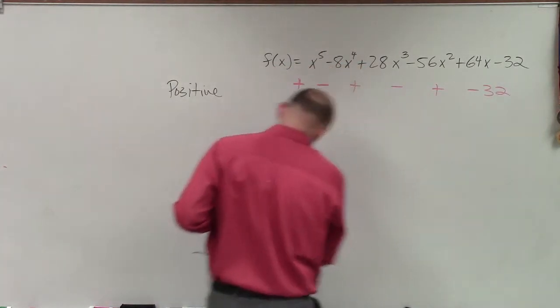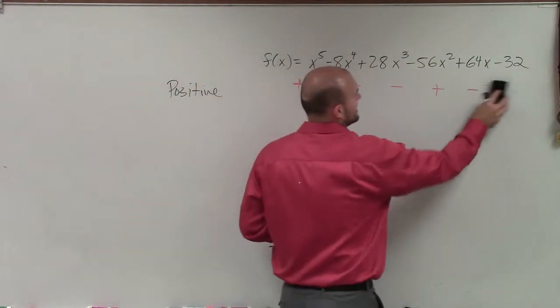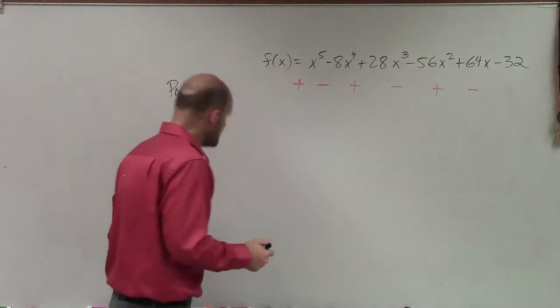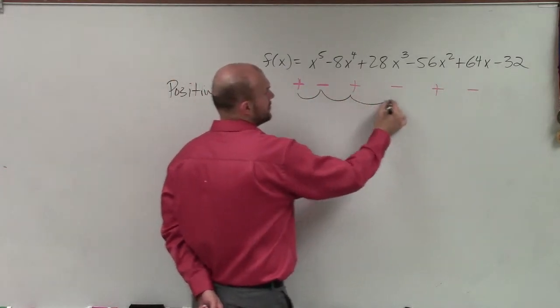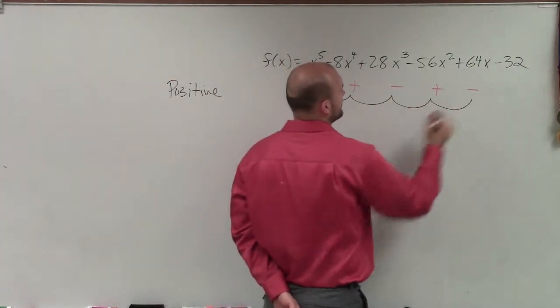Well, I don't know why I wrote the 32 in there. We just care about the sign, not so much the numbers. So you can see my number of times that I alternate from positive to negative is 1, 2, 3, 4, 5.